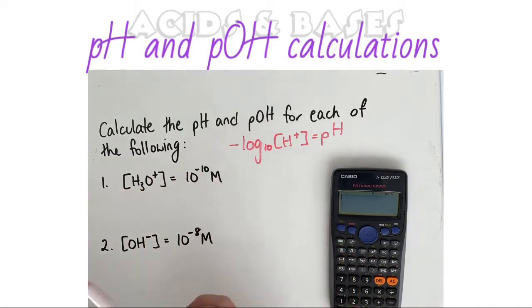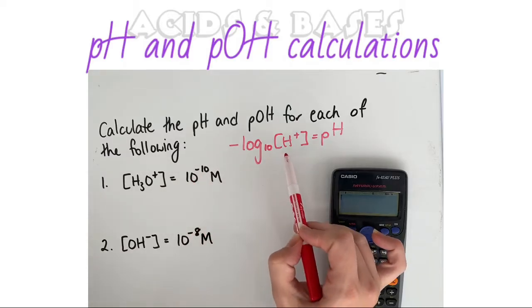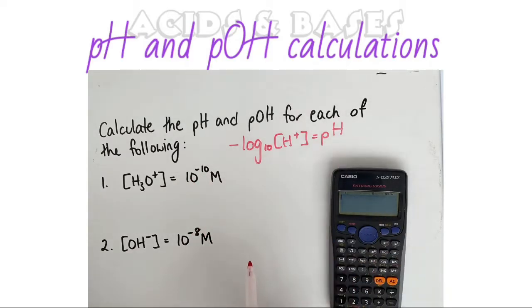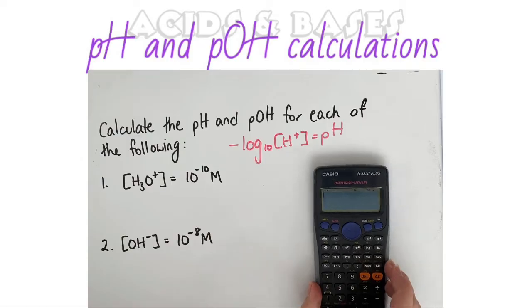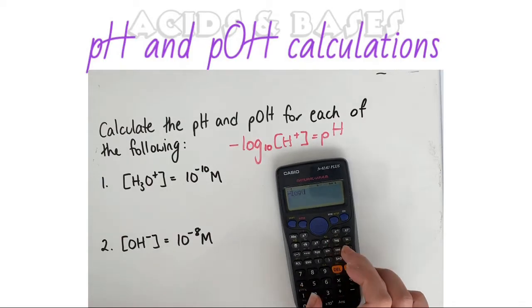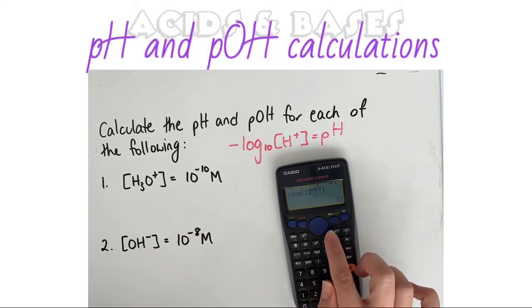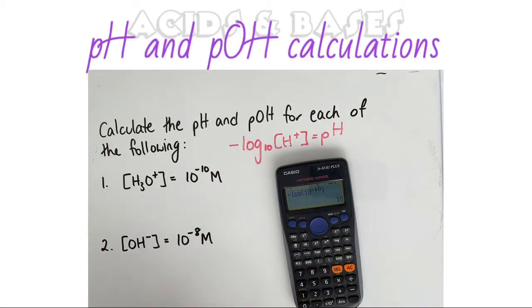In this example, all we have to do is substitute our concentration into this formula to calculate the pH. I'm going to do that here on the calculator. I've got minus the log of 10 to the power of minus 10, and when I press equals that gives us the pH of 10.